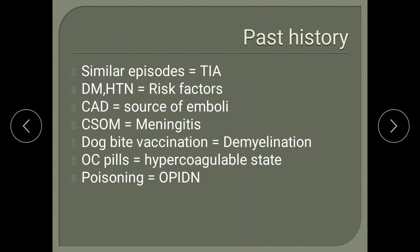So far we have asked about the nature of the history, timing of presentation, sensory disturbances, and cranial nerve history to localize the lesion. Then ask about past history — similar complaints in the recent past may give a clue regarding TIA (transient ischemic attack), an ischemic attack which resolves fully without leaving any deficit within 24 hours. Also ask about diabetes and hypertension, which are risk factors for CVA, and any history of coronary artery disease, which can be a source of cardiac emboli.